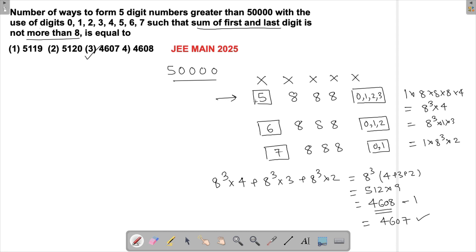What I have to do is wherever the restrictions are, like the first and the last place, that is where I have to start with. If it is greater than 50,000, then I should be starting with 5. I should not be starting with any other number.